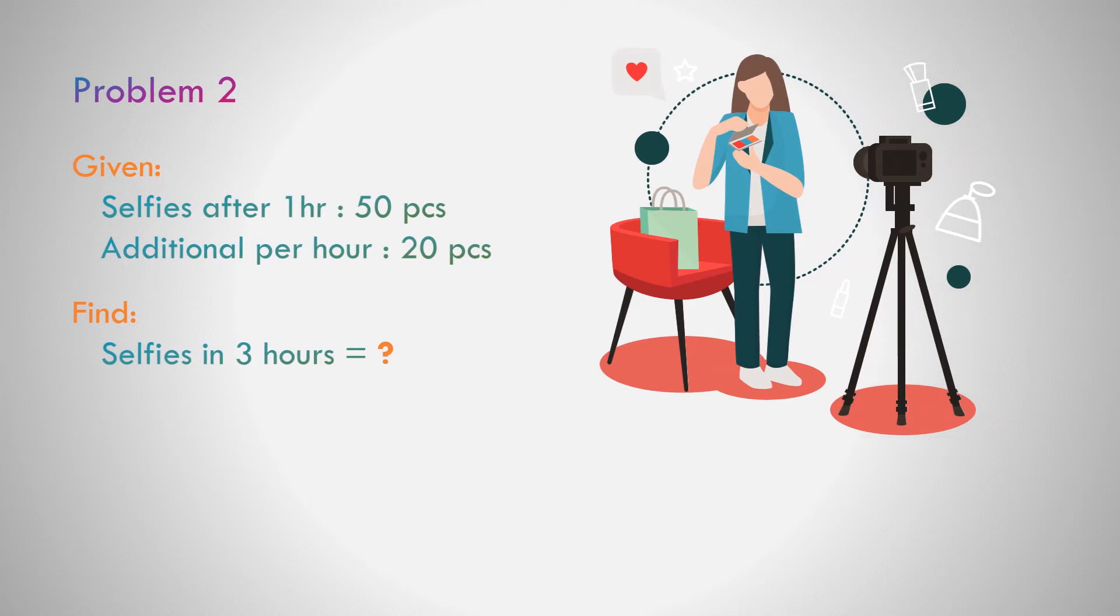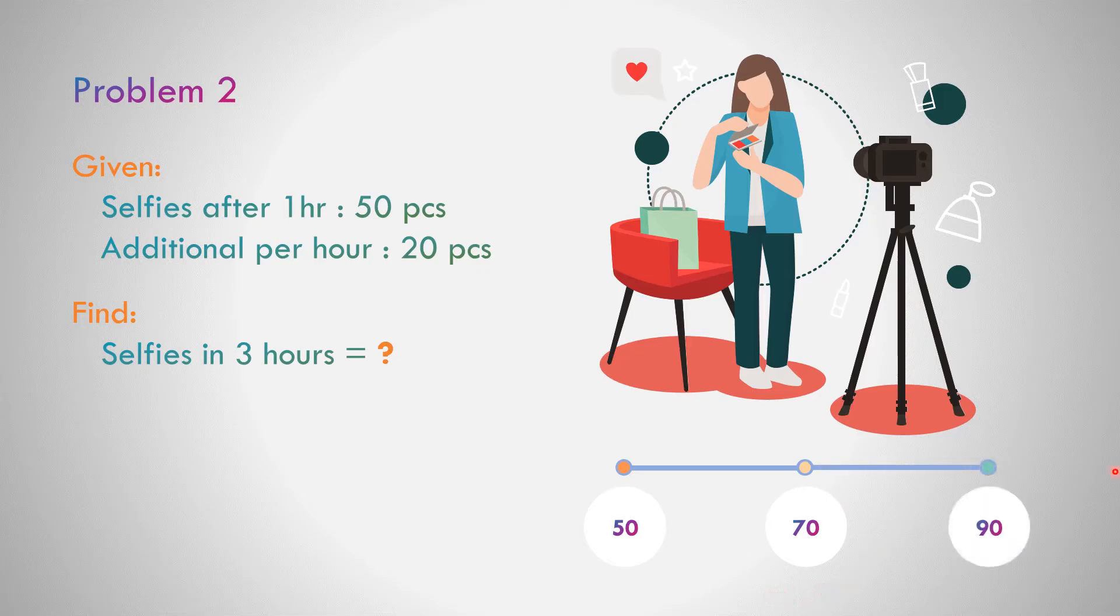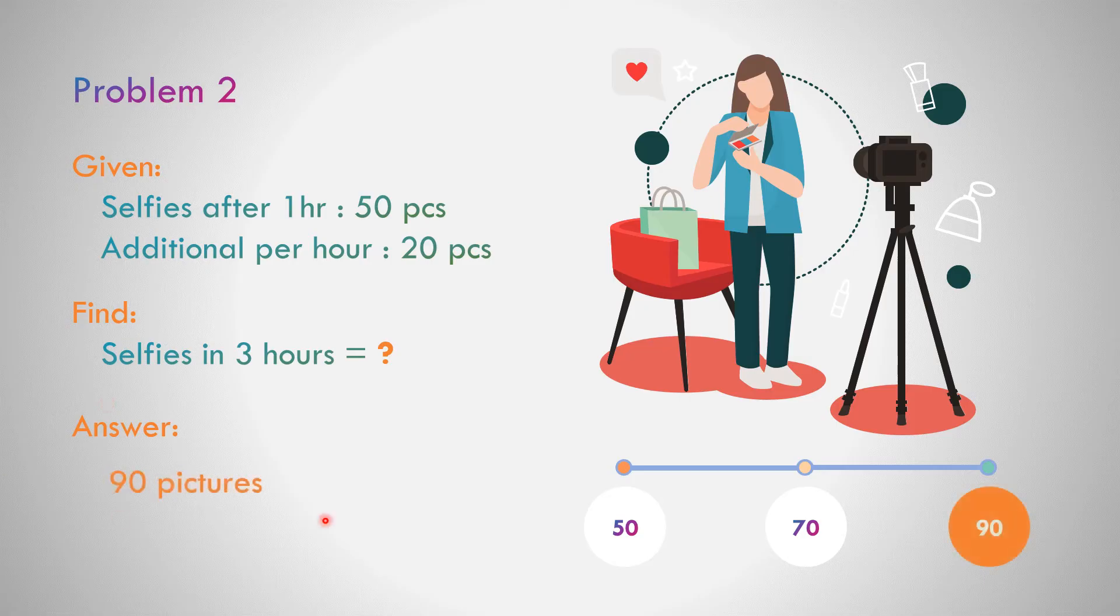It means Carlita's selfie in 3 hours equals 90. Let us use manual computation. In the first hour, selfie is 50 pieces. After an hour, 50 plus 20 is 70 pieces. After an hour, 70 plus 20 is 90. So Carlita takes 90 pictures in all.